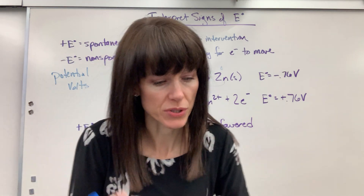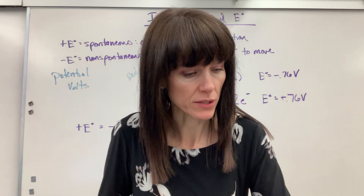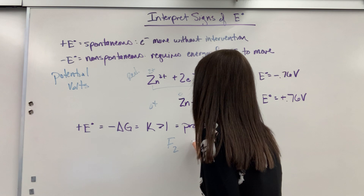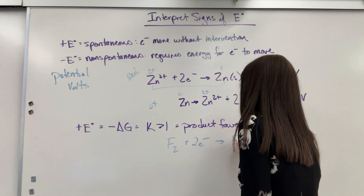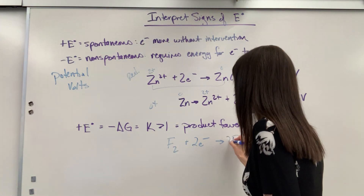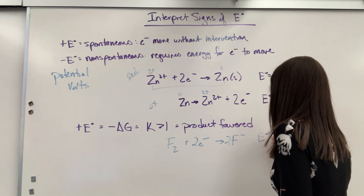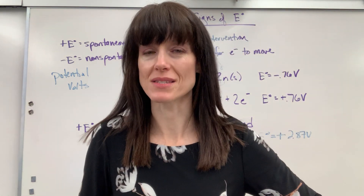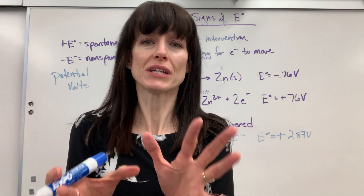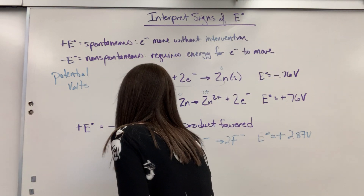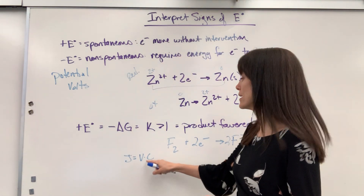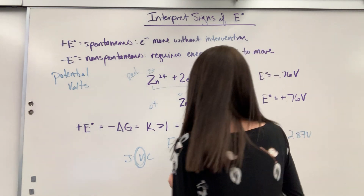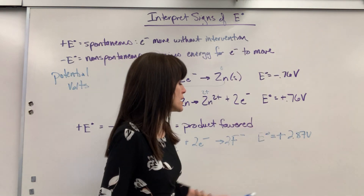Let me give you another example just on potential. Here is fluorine — this is a good one because it's so big. This is the reduction of fluorine: fluorine gas plus two electrons gives two fluoride ions. Look at the potential — E is a positive 2.87 volts. Now, I'm using the word energy, but honestly it's not energy, it's a potential. Energy is joules, and you'll remember that joules equals voltage times coulombs — that's energy. E is just the potential.